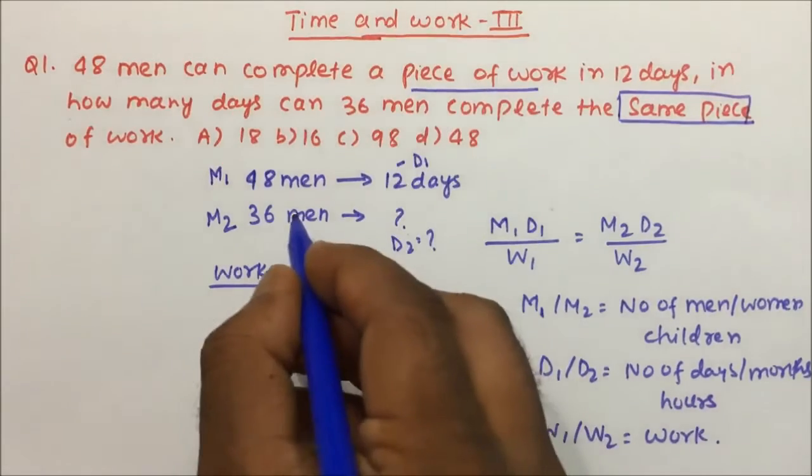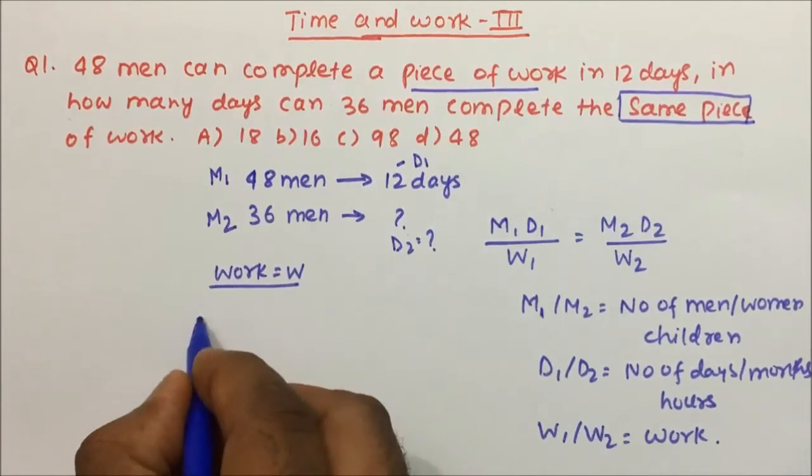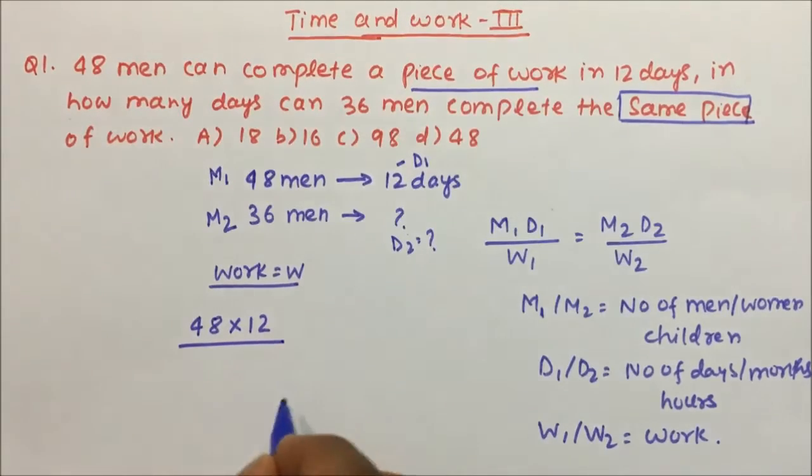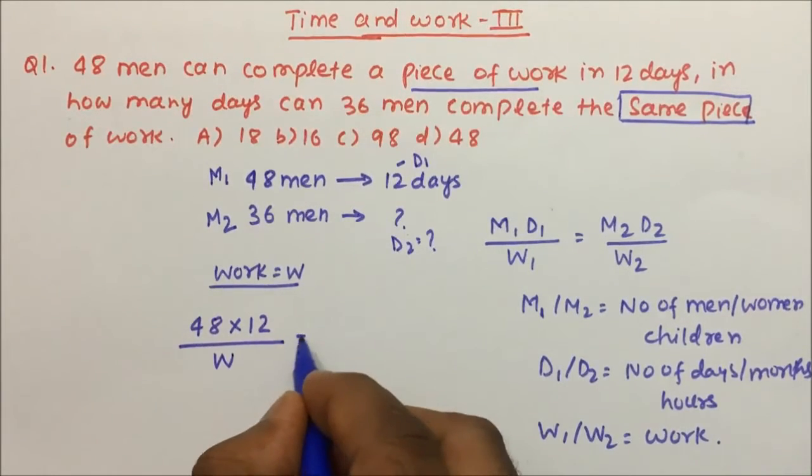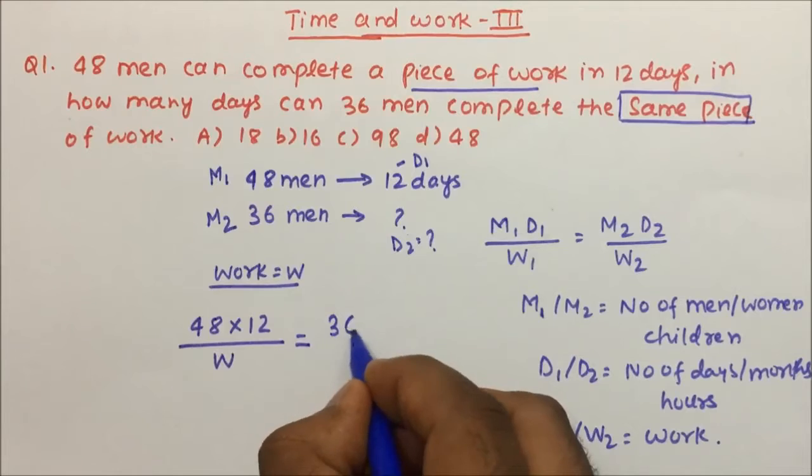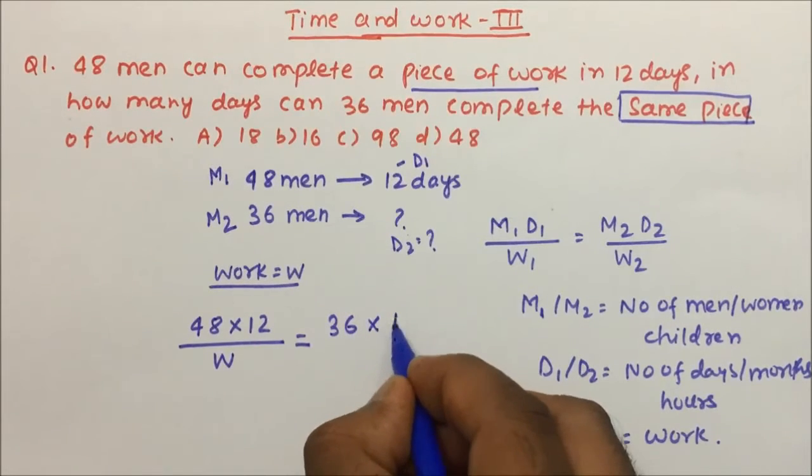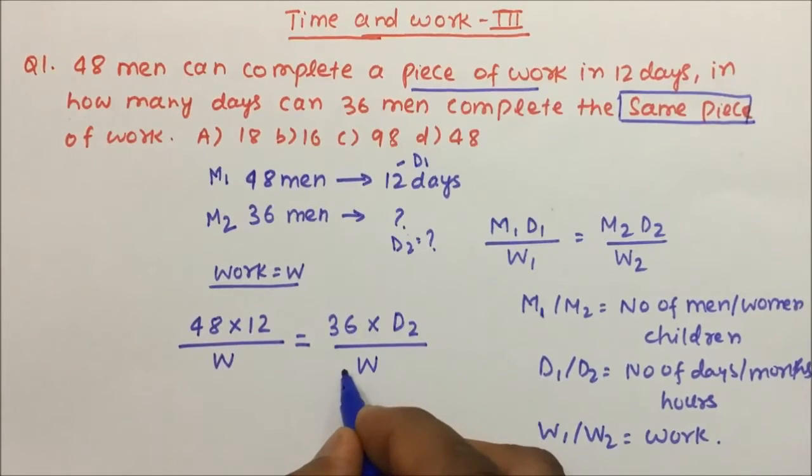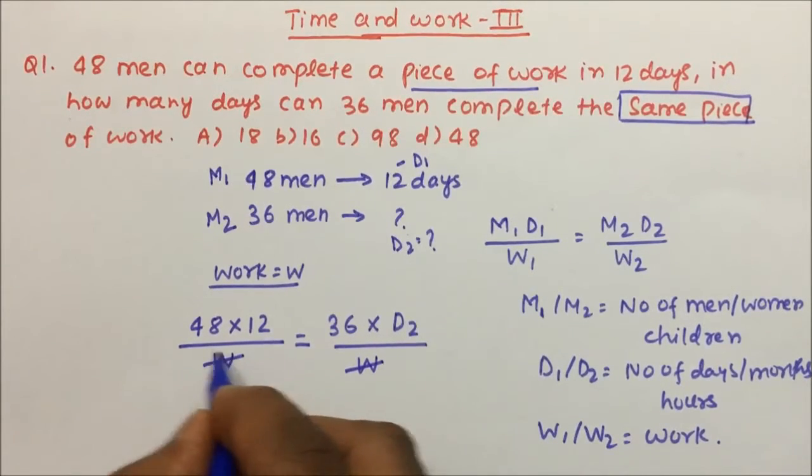Now we will put the values in the formula. M1 is 48, D1 is 12, and W1 is W equals M2 is 36, D2 is what we have to calculate, and work is W. This W and this W will get cancelled.